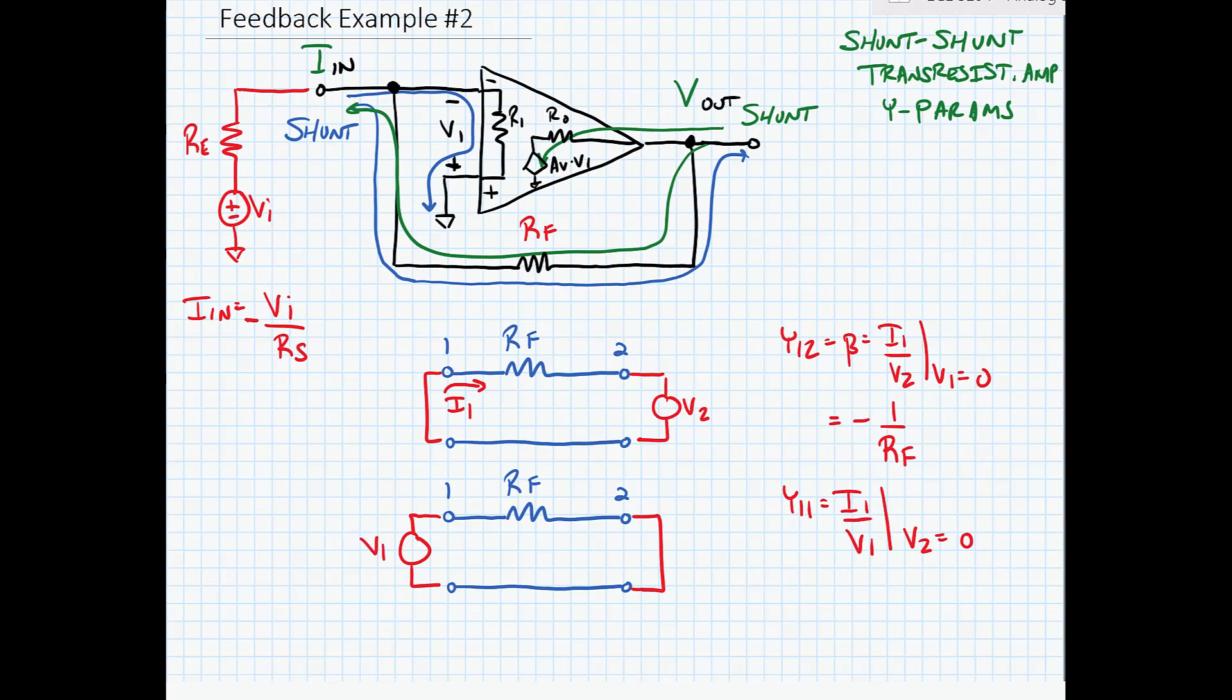test voltage source V1 and measure the current I1 that flows from that test source. Of course, this means that Y11 is equal to one divided by RF.